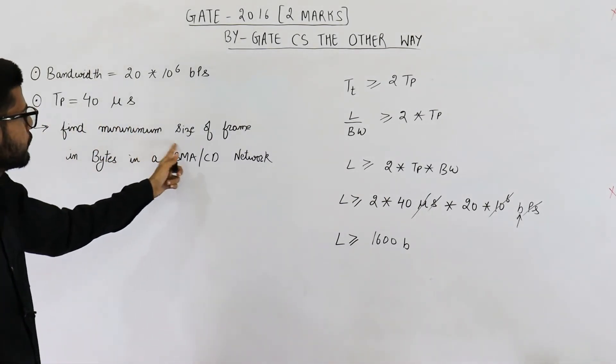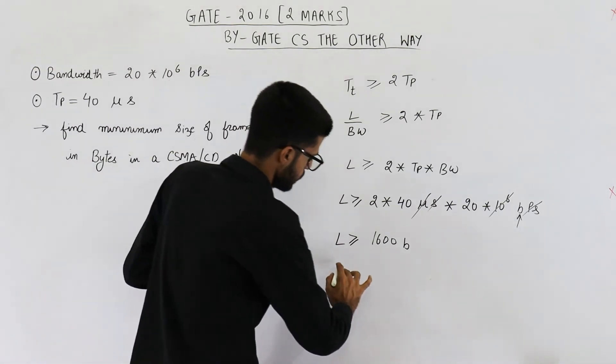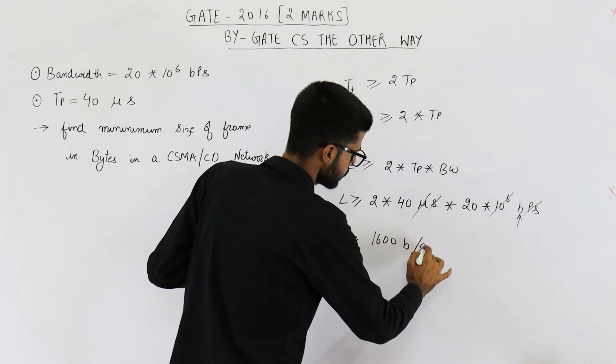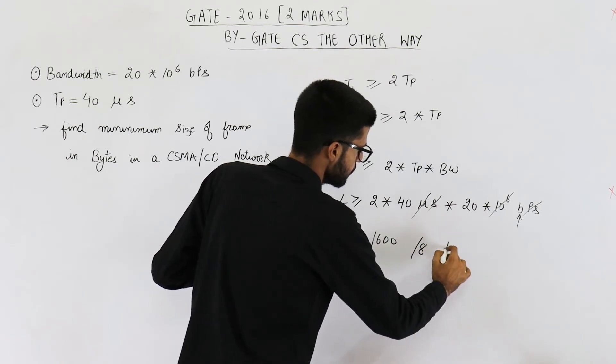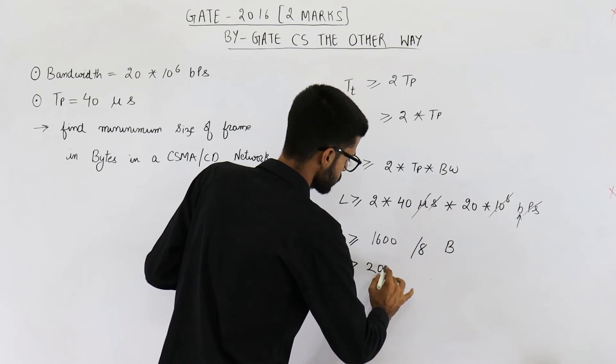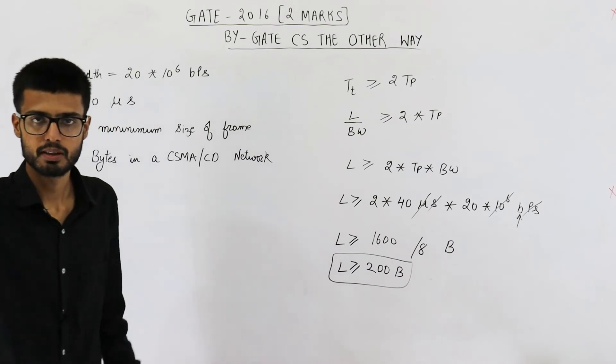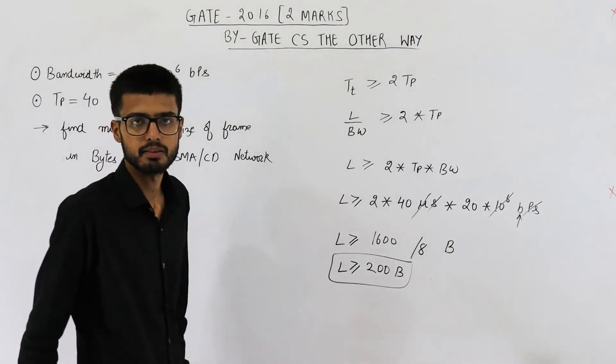They were asking the minimum frame size in bytes. That means we just need to divide this value by 8. So these many bytes... 8 2's are 16, that means 200 bytes. So the minimum value of frame size is 200 bytes. This is your answer.